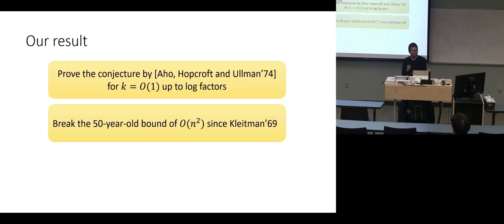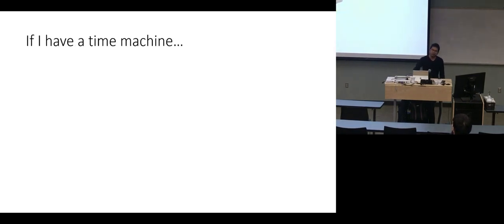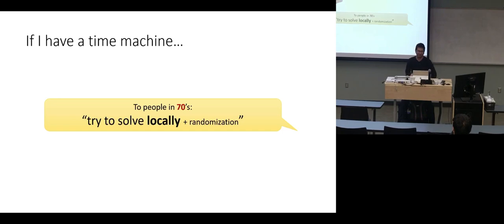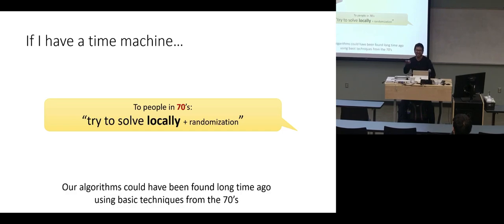When k is small, for any constant k, you basically get something like linear time. The algorithm works in directed graphs too. So this basically proves the conjecture when k is small and breaks the long-standing 50-year barrier. The message is: if I could tell people in the past, just try to solve this problem but think locally and use randomization — because this algorithm could have been found a long time ago. They just didn't think of it this way.